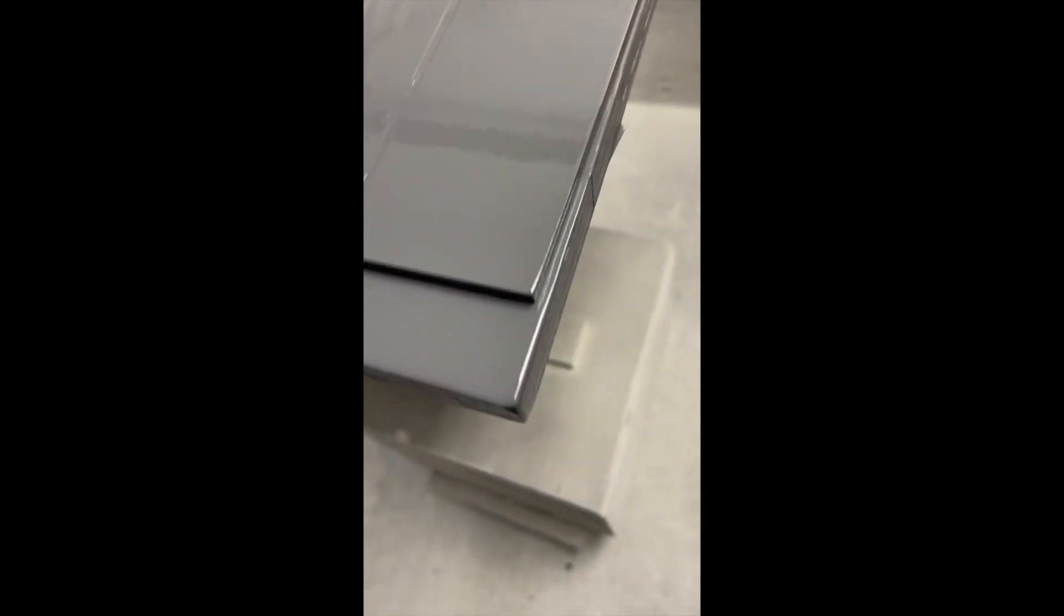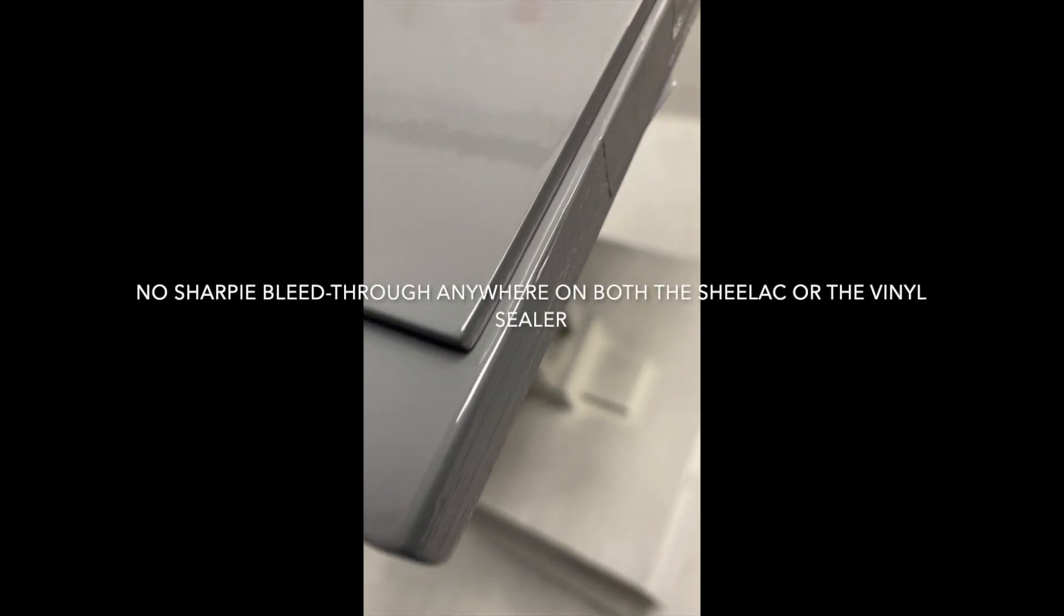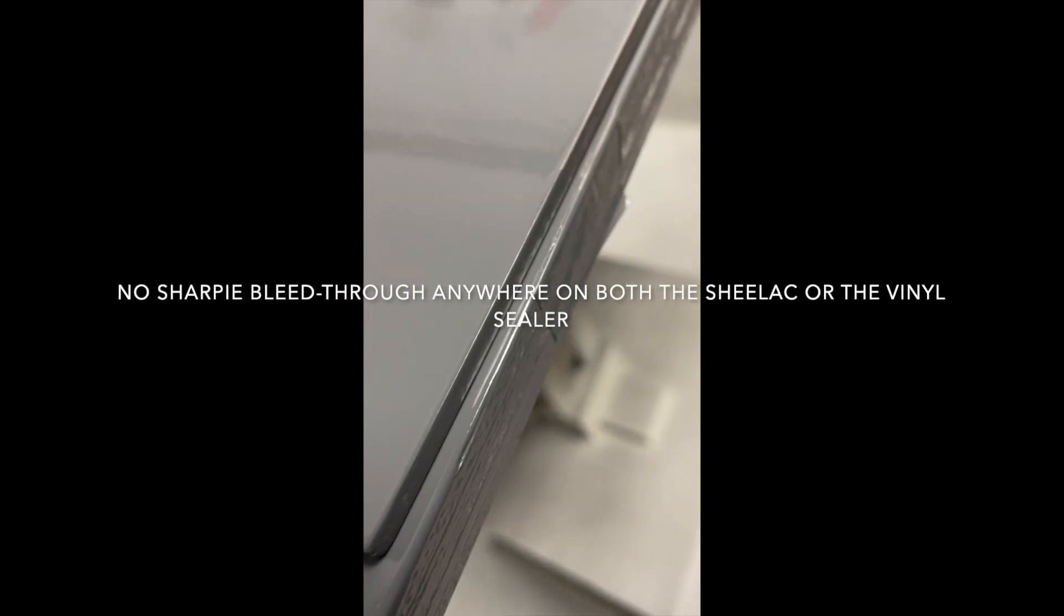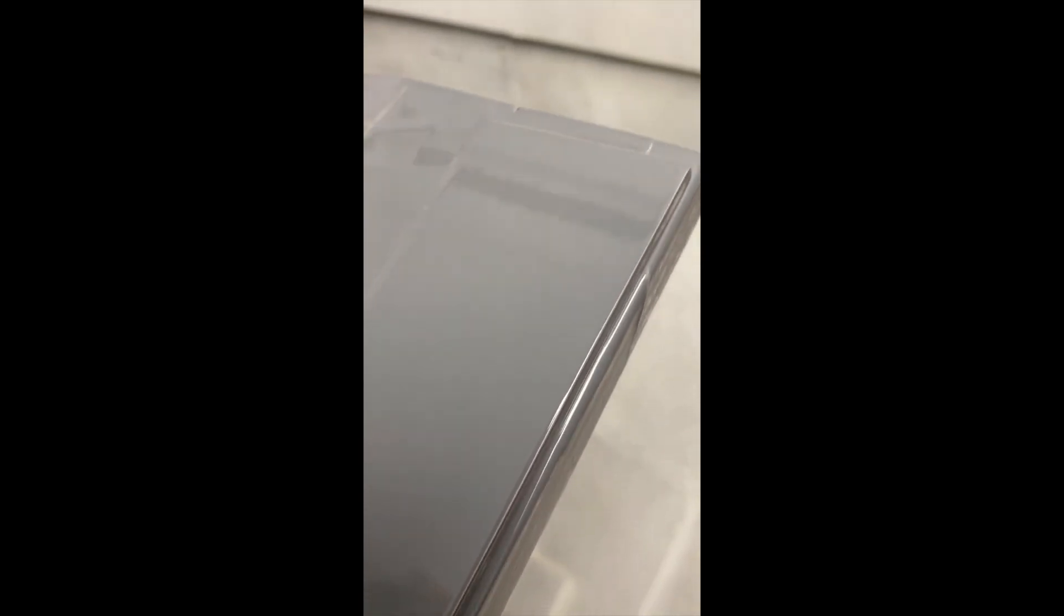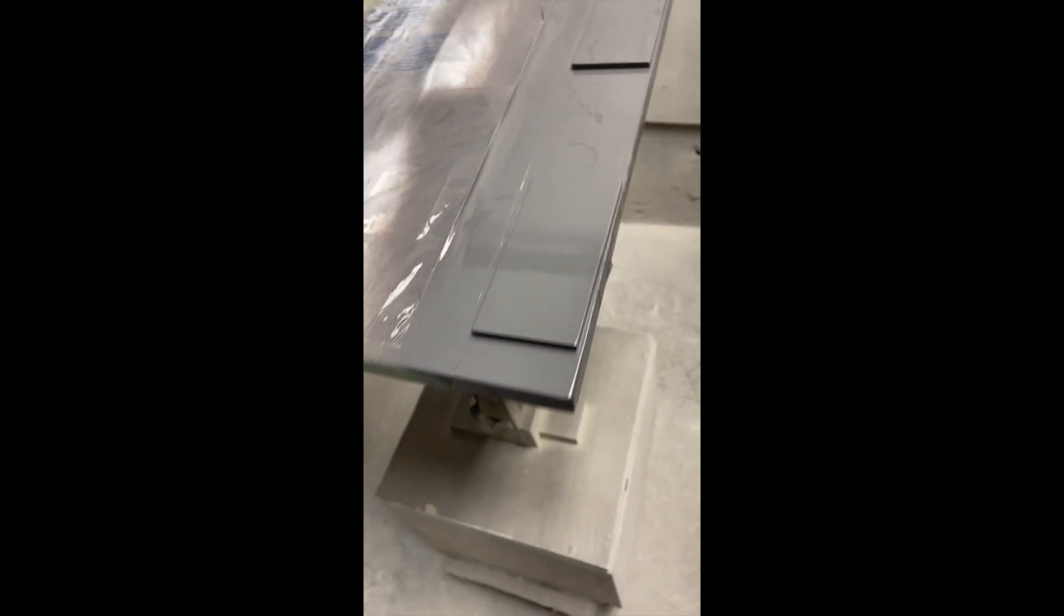Funny enough, we didn't get any bleed through come through on the vinyl sealer or the shellac, whether we did one coats or two coats. Now I wouldn't trust this system if you were going white because I believe the pigment is responsible for cutting down the bleed through. If you were to go top coat with a white, you'd probably need a second coat of primer for sure.